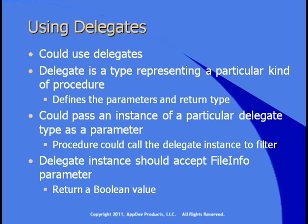Therefore, it should also return a Boolean value. It takes in a FileInfo, decides whether or not to accept that FileInfo, and returns true or false back. We could call that delegate instance for each file we find in the collection when we call the getFiles method. Let's set this up and try some examples that demonstrate this behavior — this is all old features.